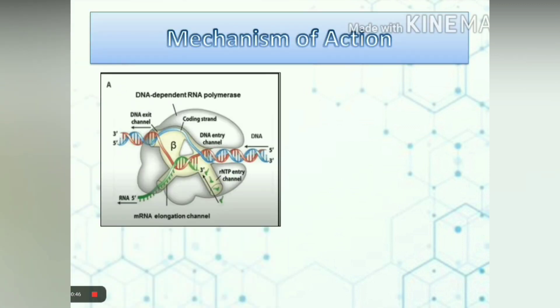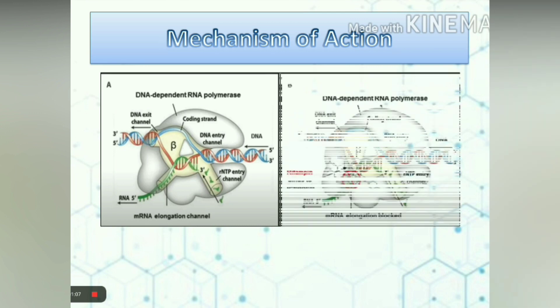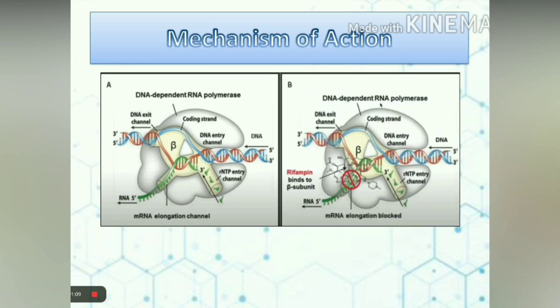The mechanism of action of rifampicin: we know that transcription — that is, formation of mRNA from DNA — requires DNA-dependent RNA polymerase. This RNA polymerase consists of multiple subunits, out of which the beta subunit is important. This beta subunit is encoded by the rpoB gene. Rifampicin binds to the beta subunit and prevents the process of transcription. Resistance is mainly due to mutation in the rpoB gene.